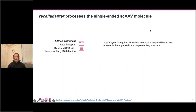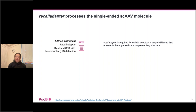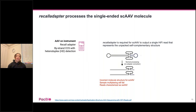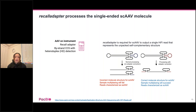What exactly is happening in the on-instrument AAV mode? The first feature is 'recall adapter,' which is required for processing self-complementary AAV to output a single read representing the unpacked self-complementary structure. Without proper processing, the molecule will be treated as two strands and barcodes on one end won't be processed correctly. Using the correct recall adapter, the ITRs and barcodes at both ends are properly identified and sample multiplexing succeeds.